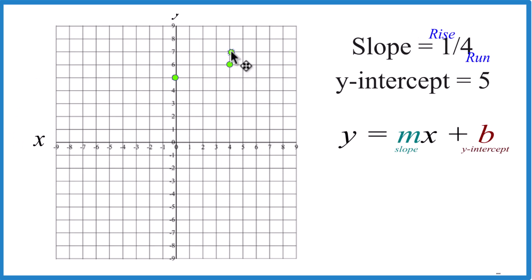From there, rise 1, go over 1, 2, 3, 4, and you can see that line with slope 1/4 and that y-intercept at 5.